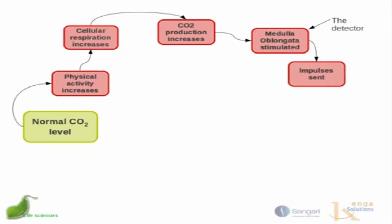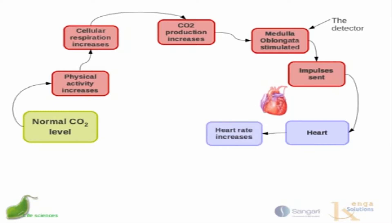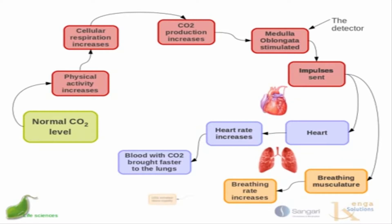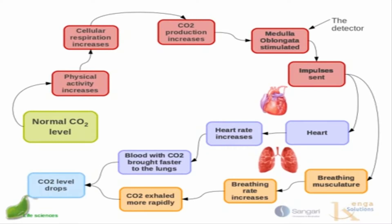The medulla oblongata sends impulses to the heart to beat faster, so heart rate increases and blood carrying carbon dioxide is brought more rapidly to the lungs. Impulses are also sent to the breathing musculature, causing breathing rate to increase — hence why we pant during exercise. The carbon dioxide brought more rapidly to the lungs is also exhaled more rapidly, so the carbon dioxide level of the blood drops back to normal. This is a standard negative feedback homeostatic mechanism.